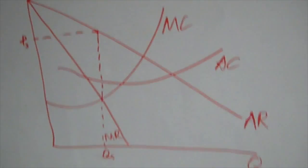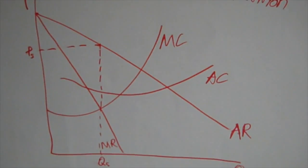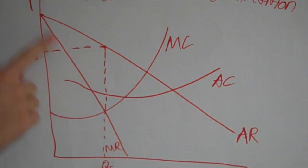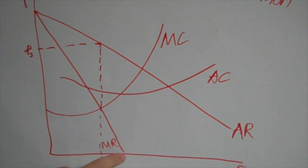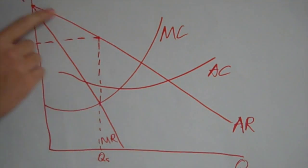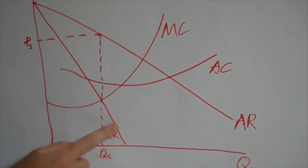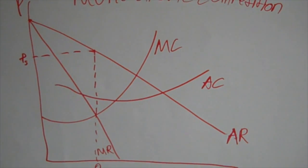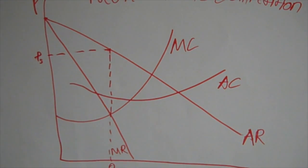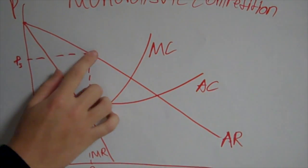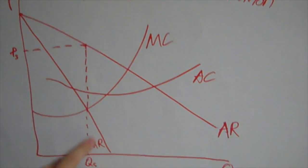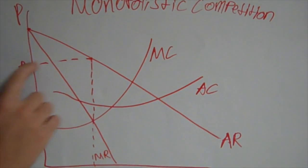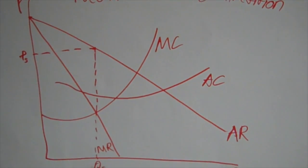This is a monopolistically competitive market graph. In this market graph, MR does not equal demand — average revenue is demand. MR is lower here because of price, product differentiation, and advertising. I'm going to produce right here at this quantity and this price level.